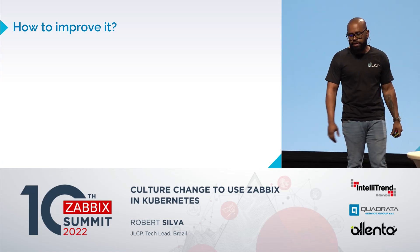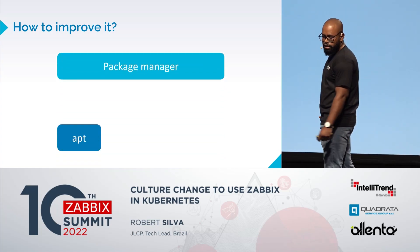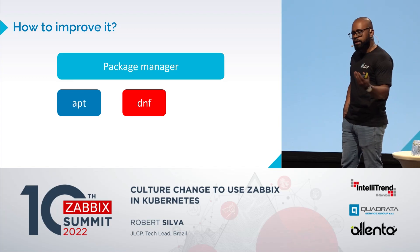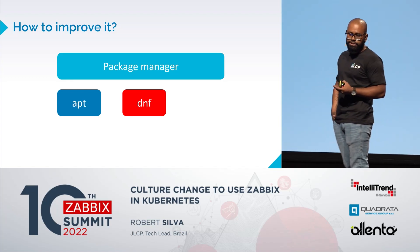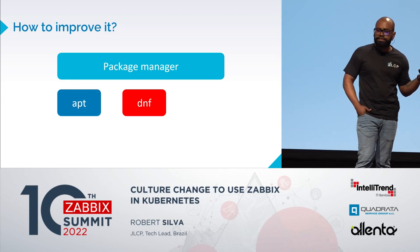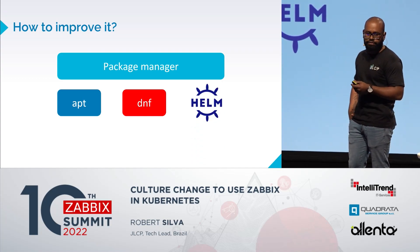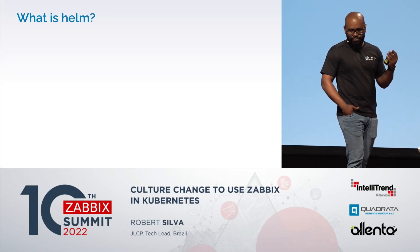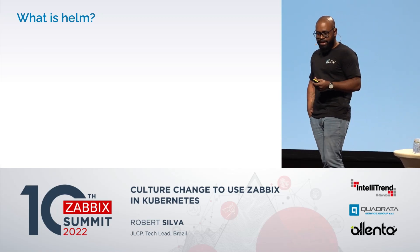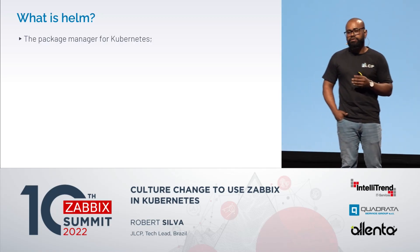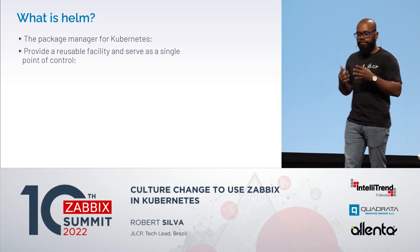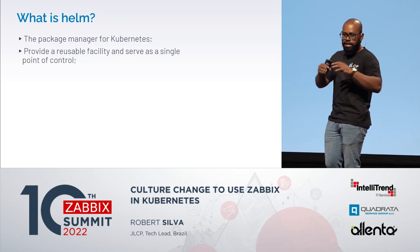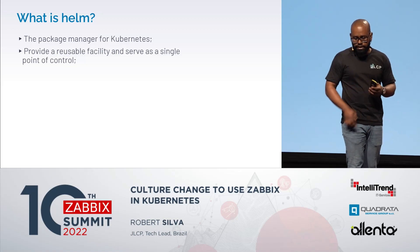How do you improve this? You use a package manager. For Debian/Ubuntu we have APT; for Red Hat, CentOS, and Oracle Linux we have DNF; and for Kubernetes we have Helm — a package manager for deploying objects in Kubernetes. Basically, Helm is the package manager for Kubernetes. It provides a repository and facilitates a single point of control: you create a package, define some parameters and variables, and deploy it.